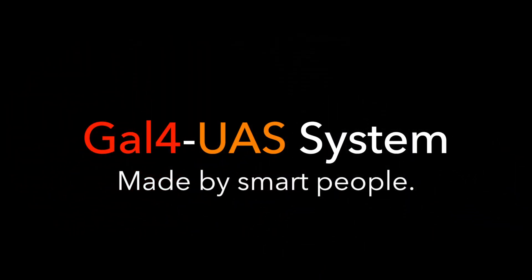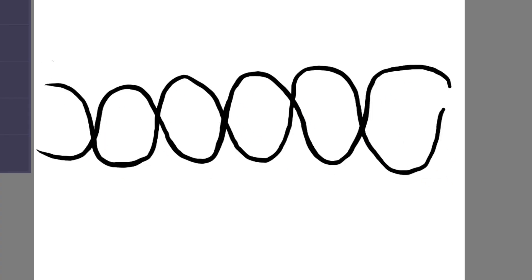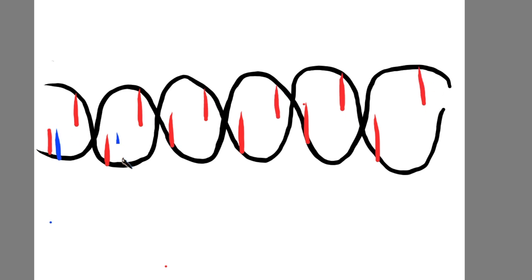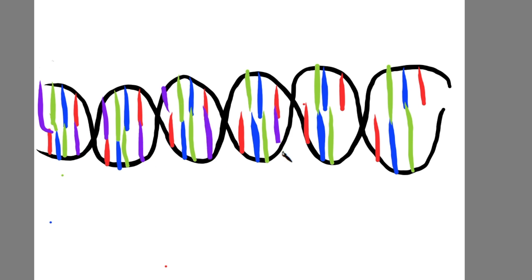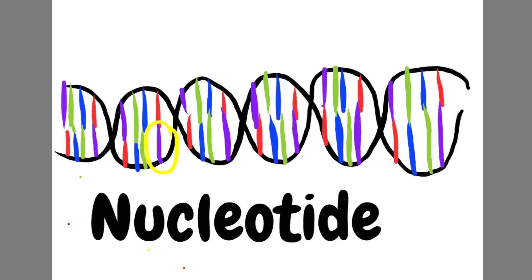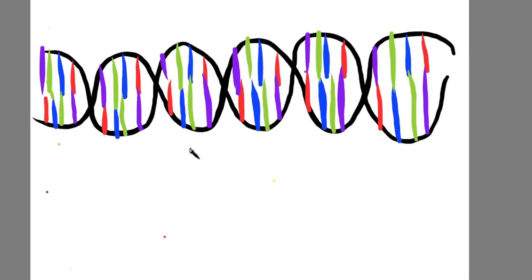But first, let's talk about how genes get expressed and become proteins, because that is really important. First, we start off with a strand of DNA. This is the famous double helix chain of nucleotides, each of which is paired with its complementary nucleotide in something called a base pair. A gene is just a certain set of these nucleotides that can be expressed to get a protein or a characteristic in the organism.